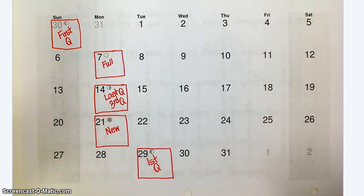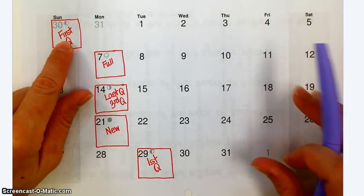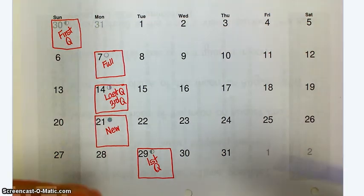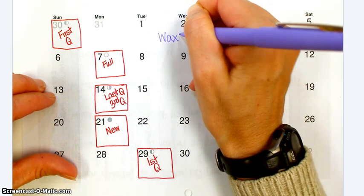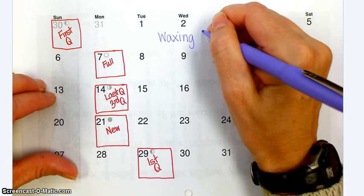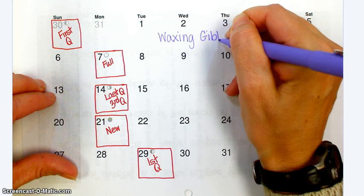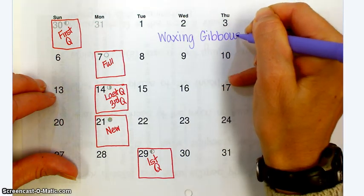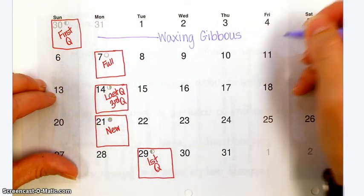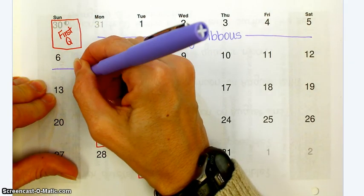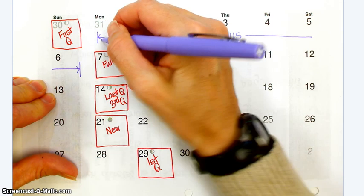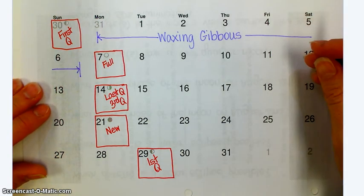I've got my principal phases done. Now I'm going to start filling in the rest of it. If the 30th is first quarter, what comes after that? Waxing gibbous. And waxing gibbous lasts for a while, doesn't it? So from the 31st all the way through the 6th is waxing gibbous. And then we get to full.